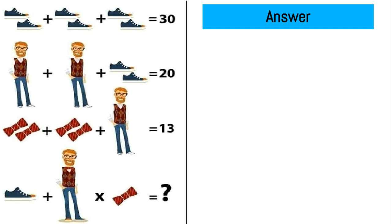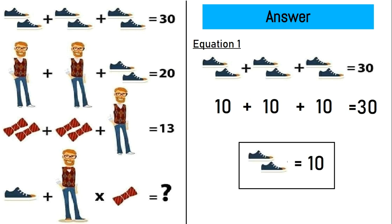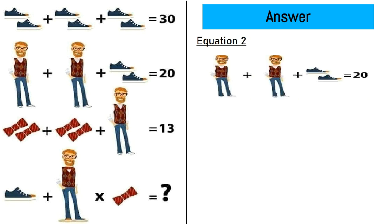Now let me tell you the correct solution of this puzzle. Let's take equation number 1, which says a pair of shoes plus a pair of shoes plus a pair of shoes is equal to 30. 10 plus 10 plus 10 is equal to 30. So a pair of shoes is equal to 10.